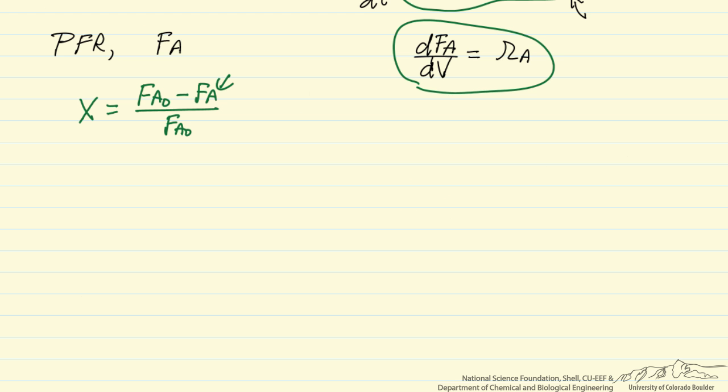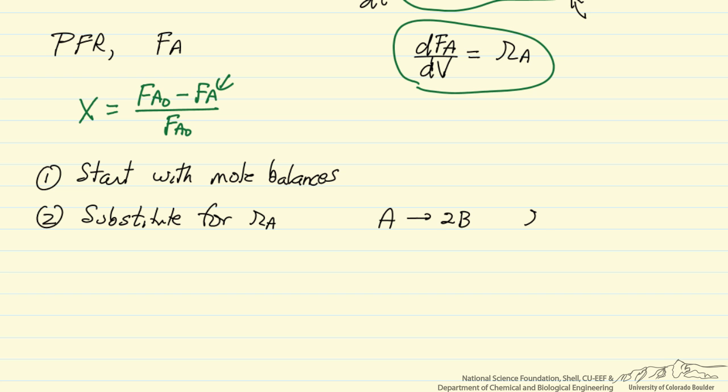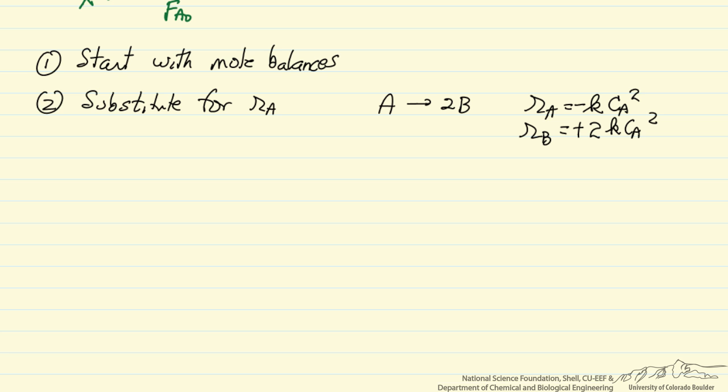Our general approach to solving mole balances in reactors: first we start with the mole balance, and we write as many mole balances as we have species in the reactor. Next we substitute into these equations for the rate of reaction. For example, if we had A goes to 2B, and the rate of reaction is k times CA squared, there's a minus sign for A because it's a reactant. The rate of B is plus, and there's a 2 for the stoichiometric coefficient. We would substitute these into the appropriate equation, keeping in mind the stoichiometric coefficients.